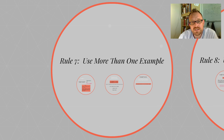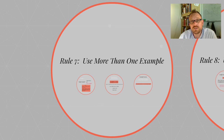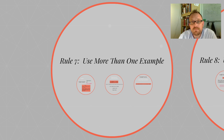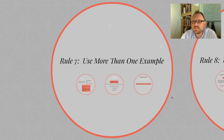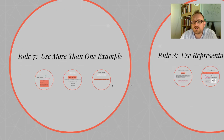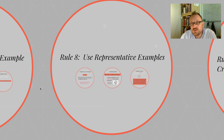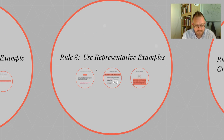If there's just one example given, it's hard to know which characteristics only apply to the individual versus the member category itself — the overall generalized statement. Thank you for watching. In our next video, we're going to take a look at rule eight: using representative examples. Thank you very much, and I'll see you guys online.